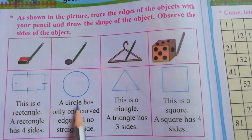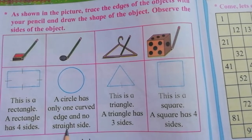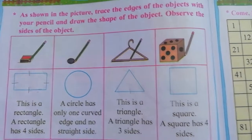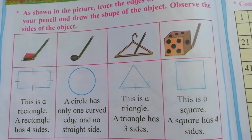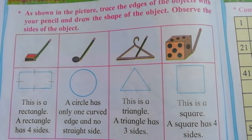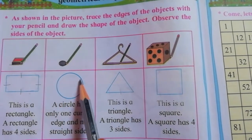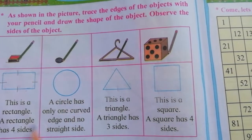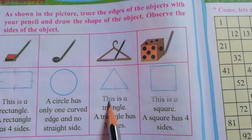Next is a circle. A circle has only one curved edge and no straight side. Students, in the previous lesson on fun with lines, we have seen straight lines and curved lines. Your circle has only one curved edge and it has no straight line.